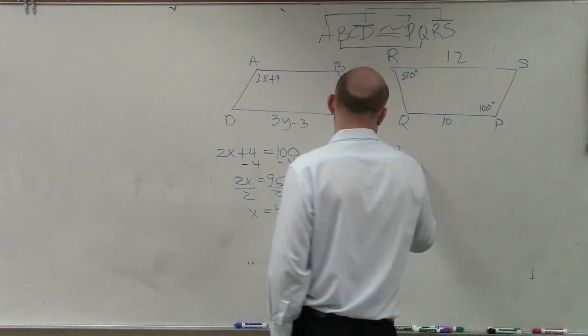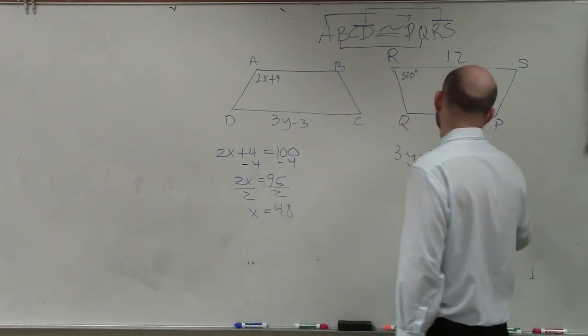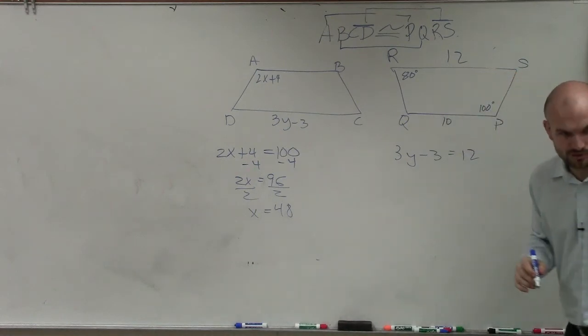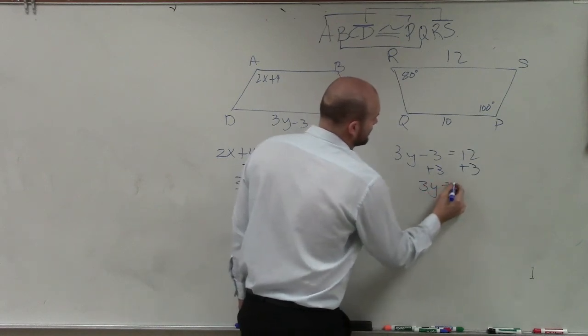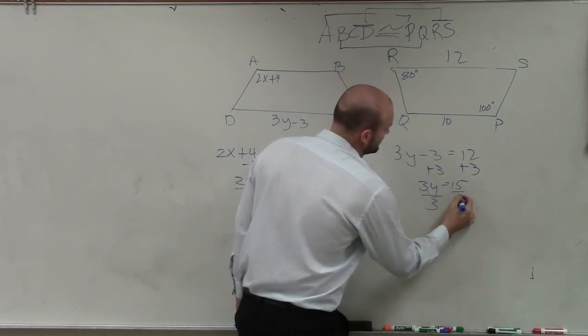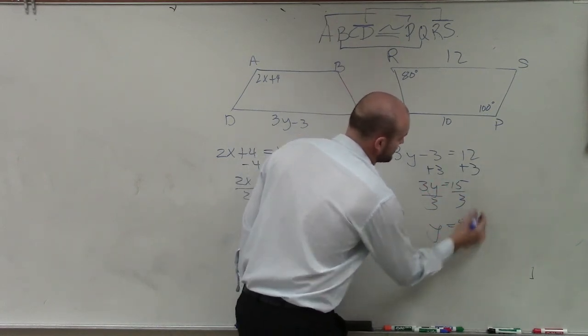So I could say now that 3y minus 3 is equal to, or 12. Now, I add 3, add 3, 3y equals 15, divide by 3, divide by 3, y equals 5.